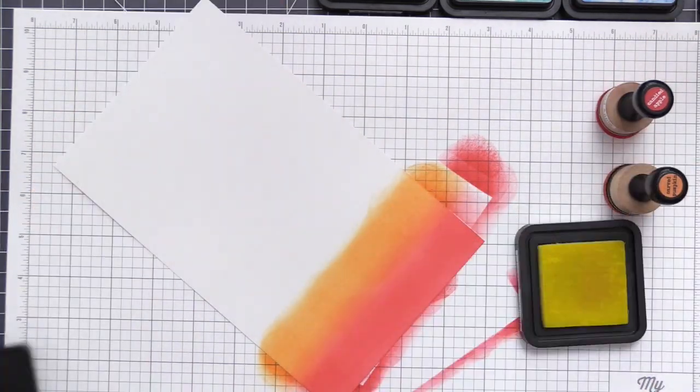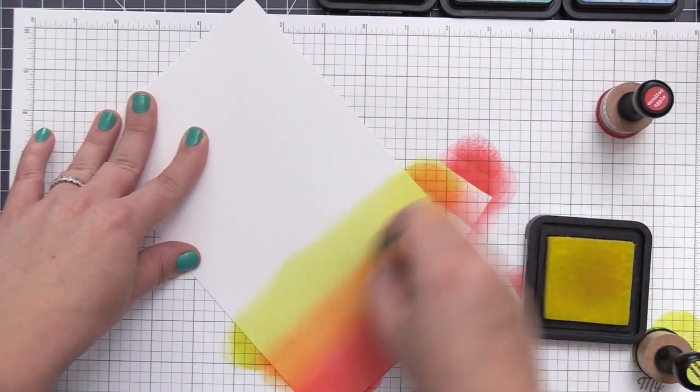And I'm also going to change the orientation of my card. So rather than do landscape, I'm going to do a vertical card.